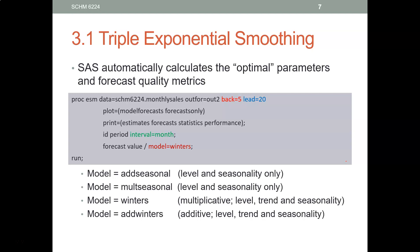Let's do triple exponential smoothing in SAS. As I said, SAS calibrates the model for you — SAS automatically gives you the alphas, betas, and gammas. We start with proc ESM and we end with run. We tell SAS where our data is: the first part is the SAS library name, dot, then the actual data set name — for example, SCHM6224.monthly_sales.